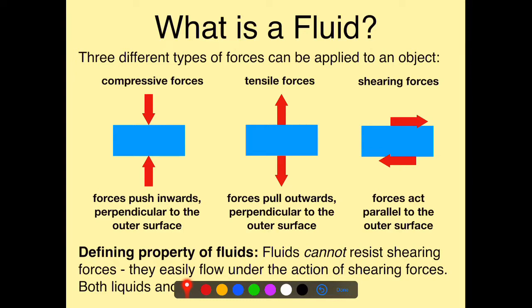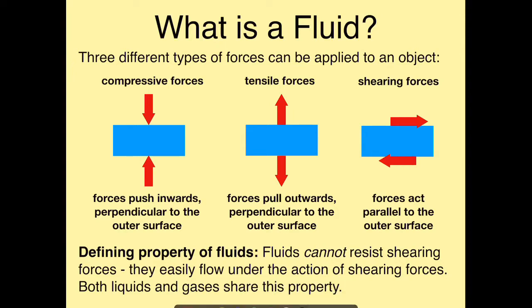We can also have a tensile force, which is similar to a compressive force except we're pulling outwards, but the force is still perpendicular to the surface. The other type of force is a shearing force. In this case, we're applying a force parallel to the outer surface of the object — both force vectors are parallel to the surface. That's what we refer to as a shearing force.